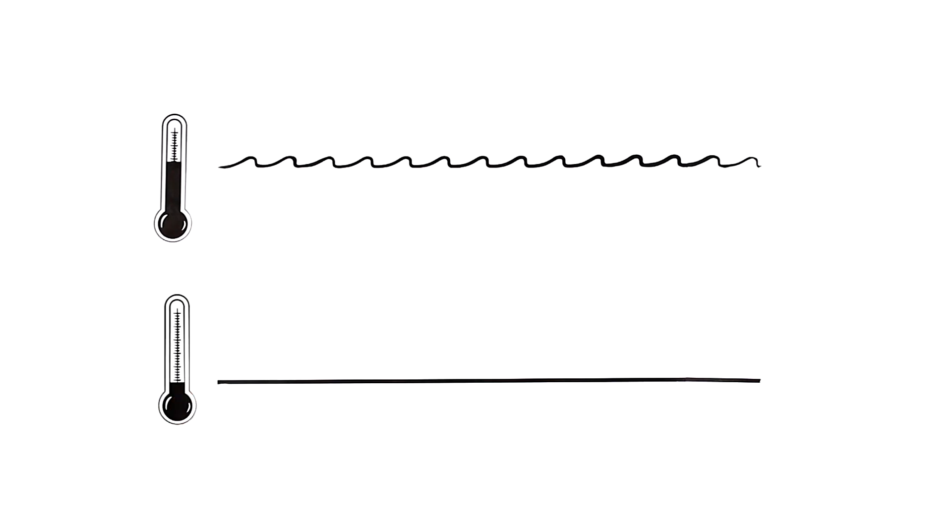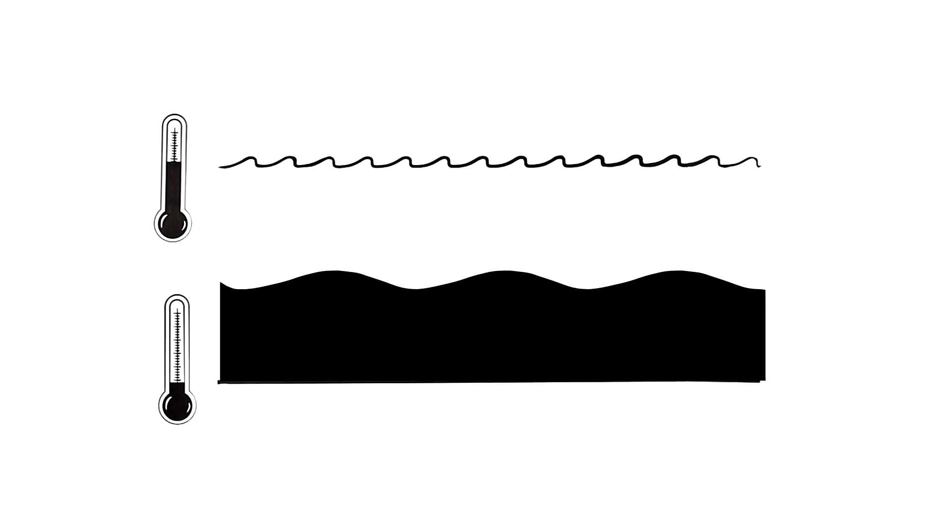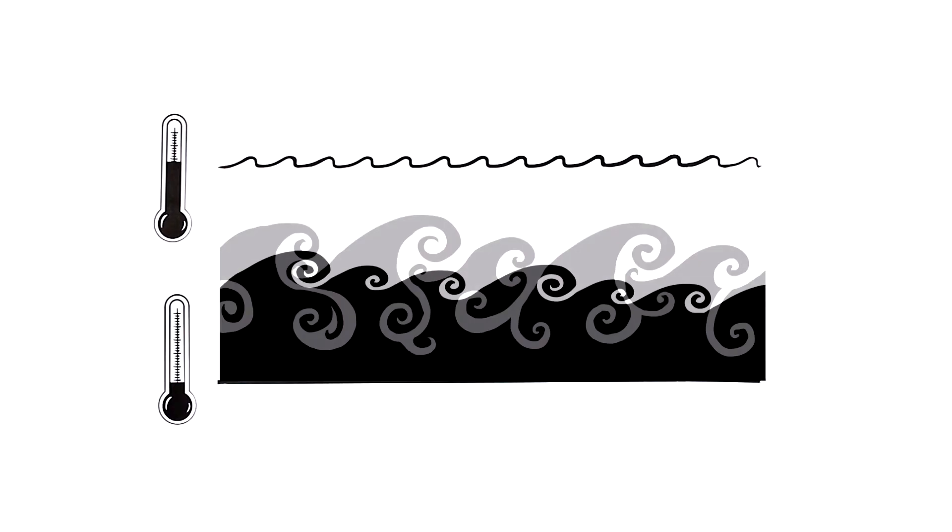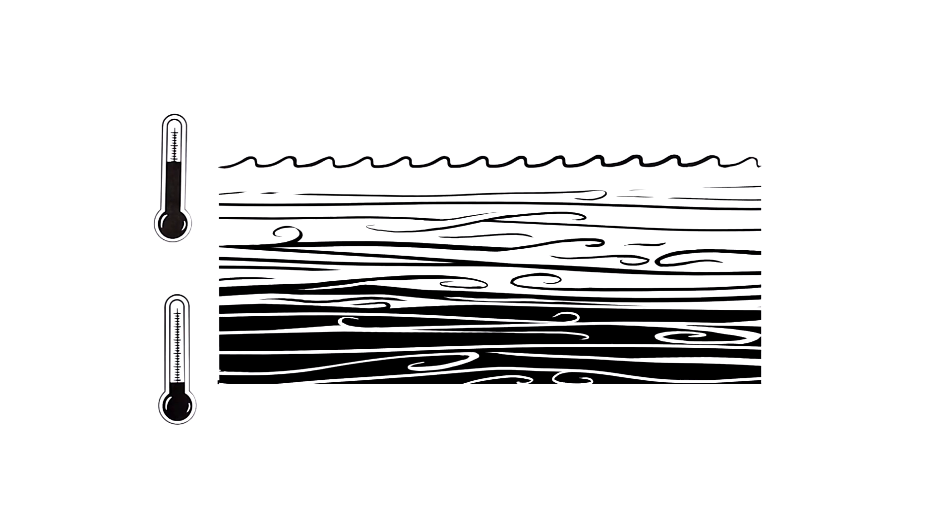During this process, different forms of energy are permanently converted into each other. For instance, the kinetic energy of the vortexes is used to move warm waters from the surface towards deeper layers.